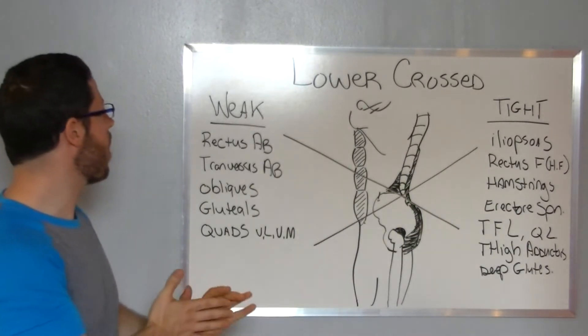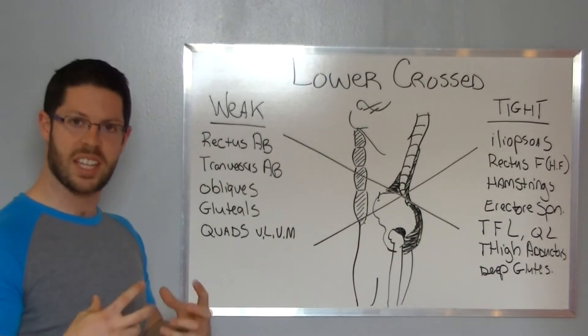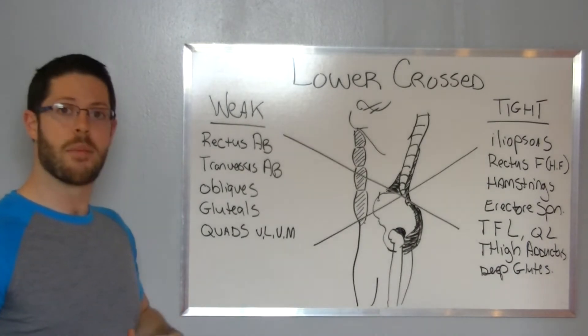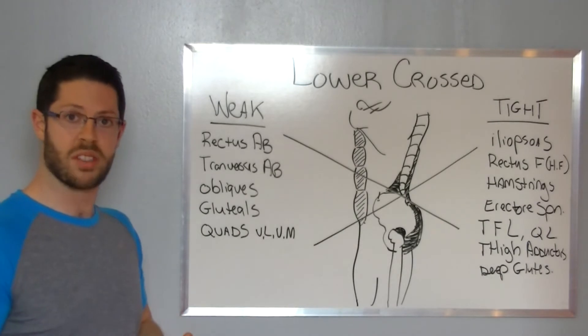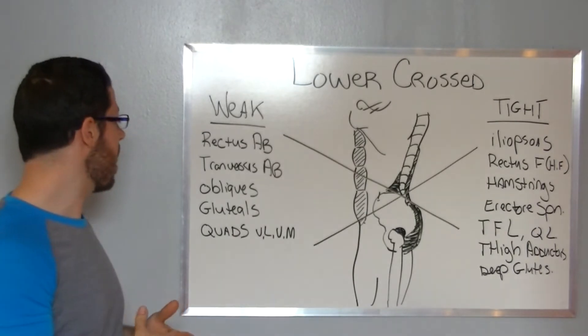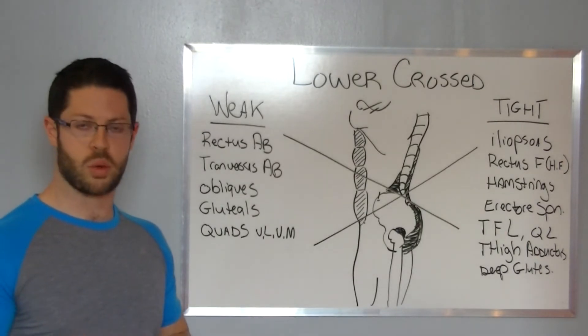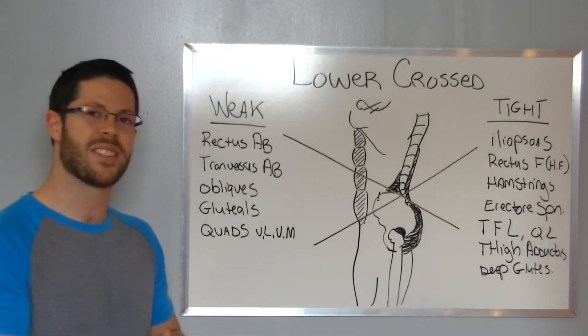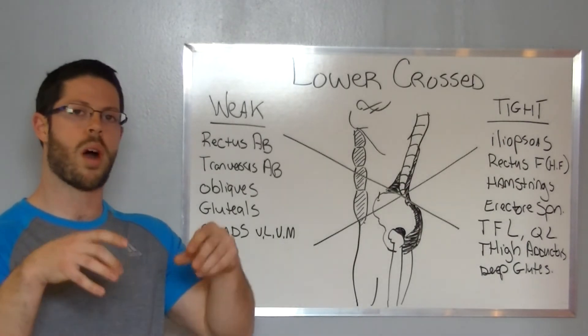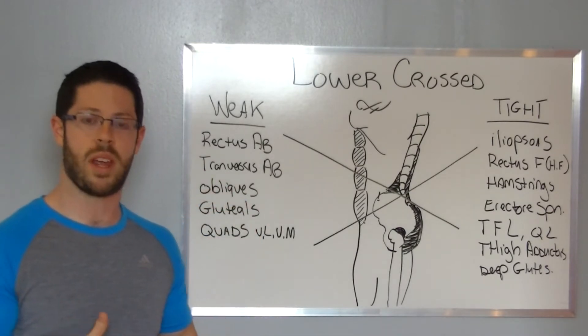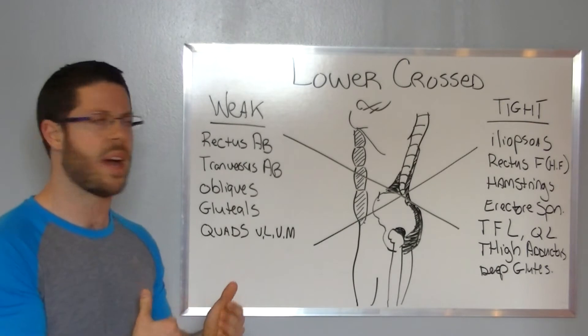The weak line represents the rectus abdominis, our six-pack muscles. The transversus abdominis, the internal abdominal wall that acts as a corset, that becomes weak. The obliques, internal and external obliques, they also get weak. The gluteals, all the glutes will get weak as well. And the quads, vastus medialis and vastus lateralis, the quads that run on the outside and the inside of the thigh, they typically get weak. There are more, but this is the rundown.